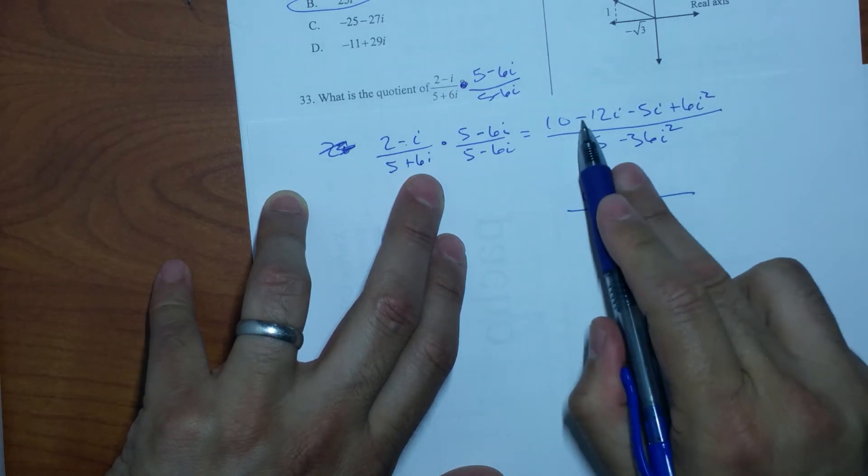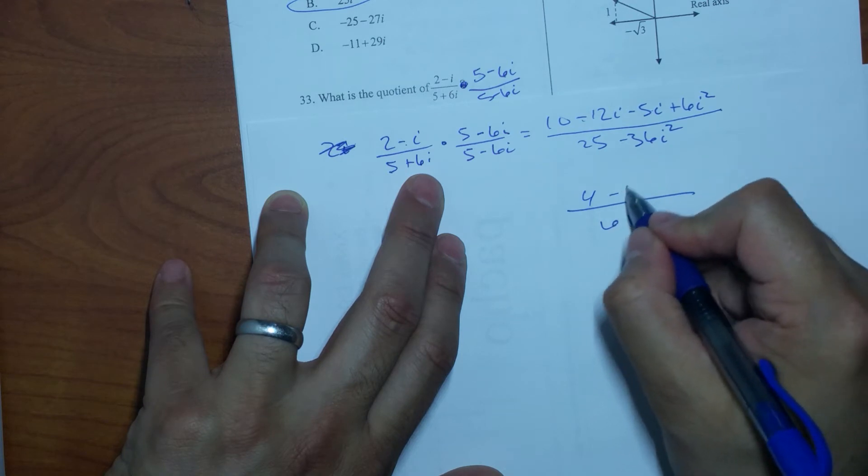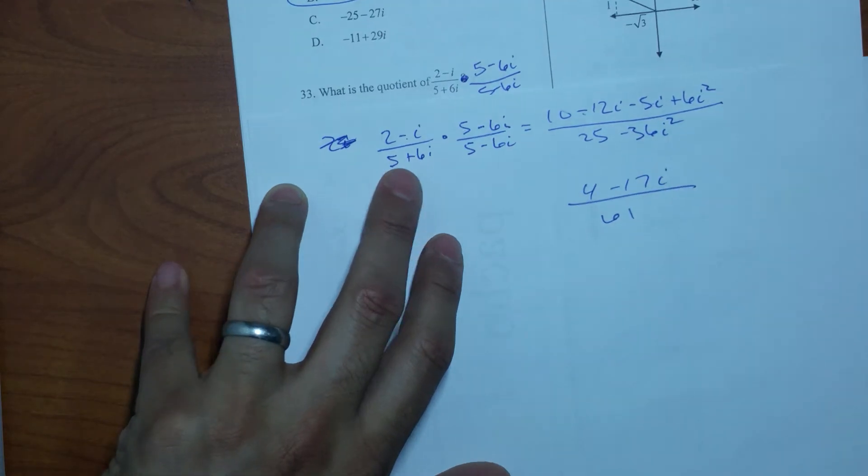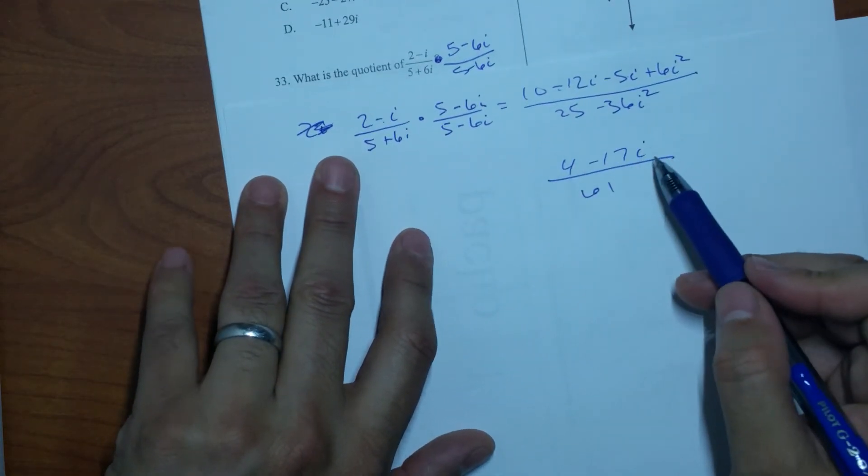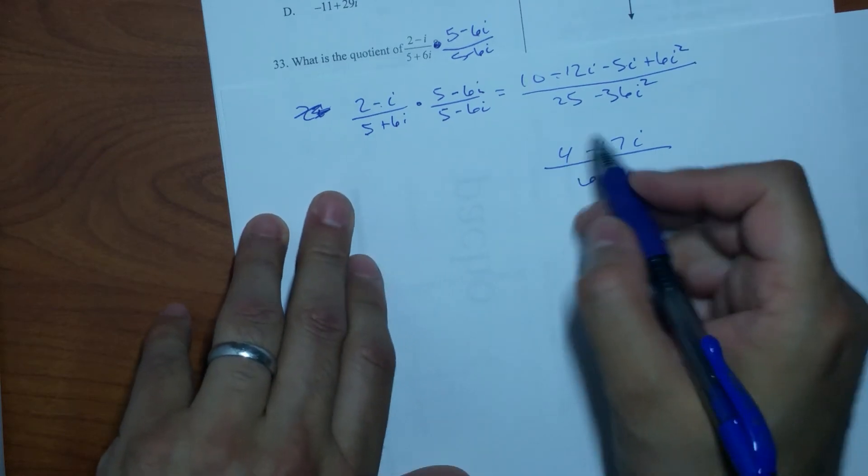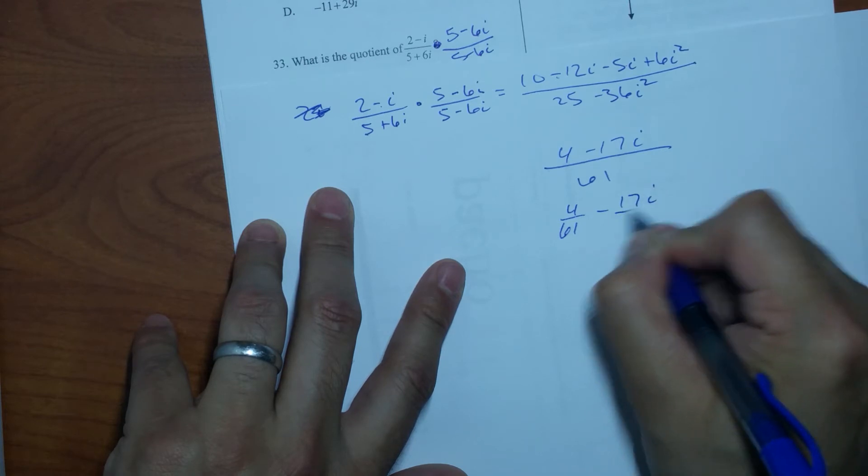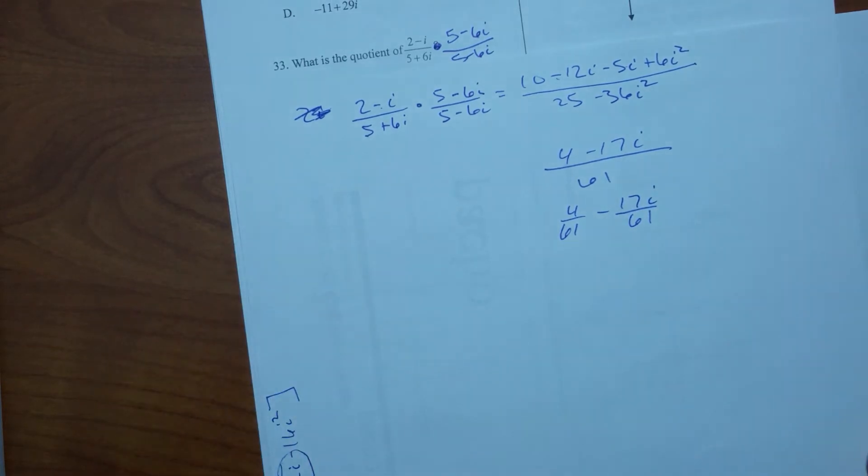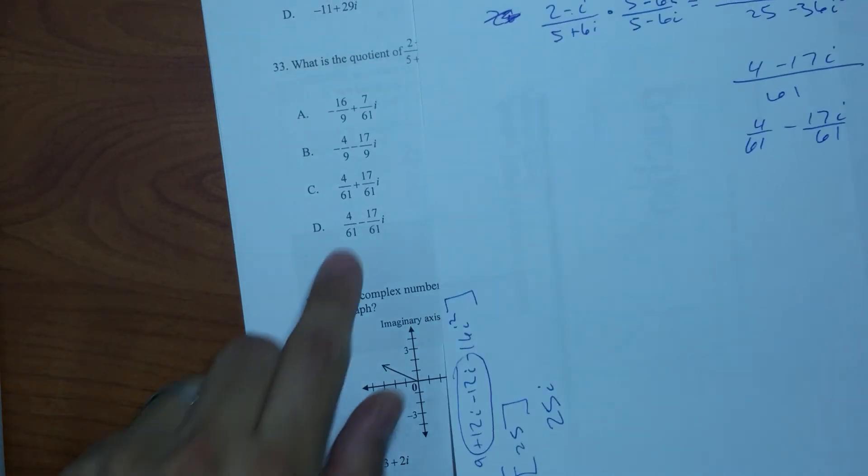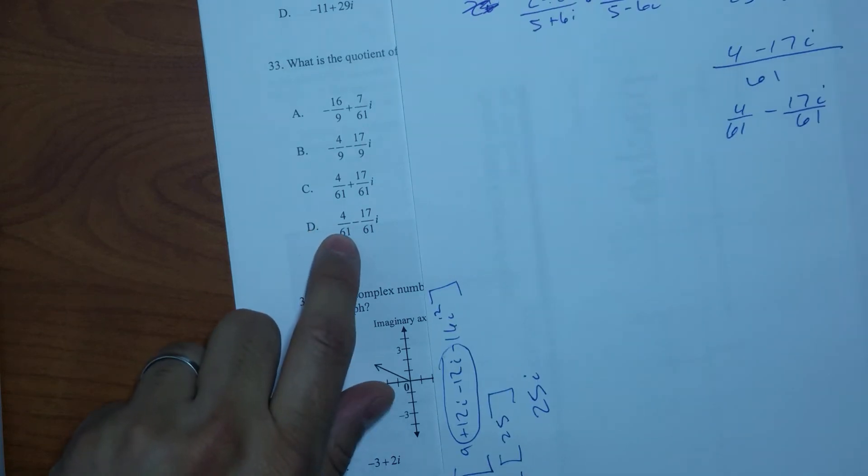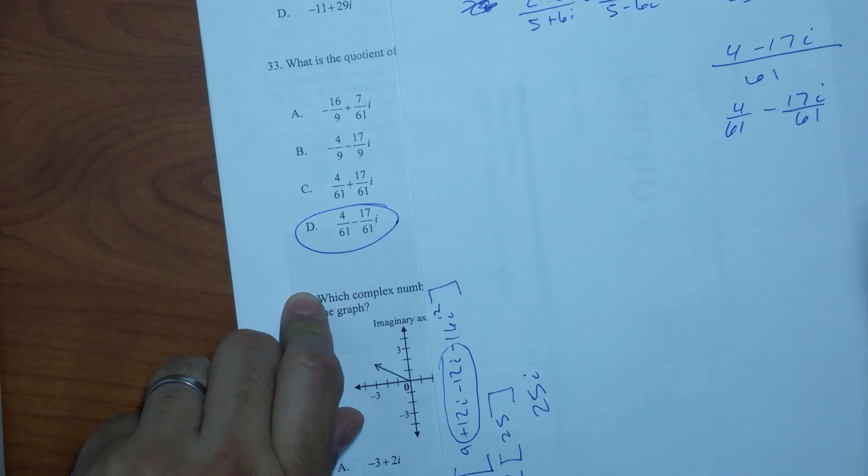Now on top, this is going to turn this into a minus 6. 10 minus 6 is 4 minus 17i. And then all I have to do is separate my real and imaginary, right? So the real part is going to be 4 over 61 minus 17i over 61. So my answer to this has to be, what is it, 4 there, D there. The answer is going to be D there.